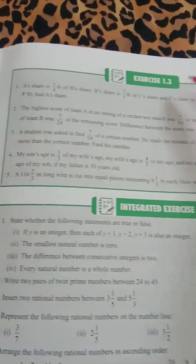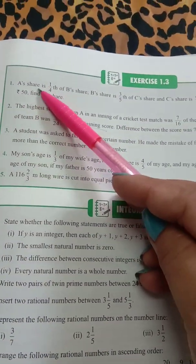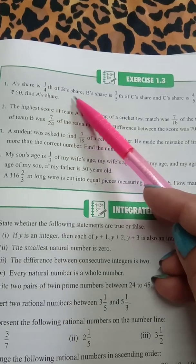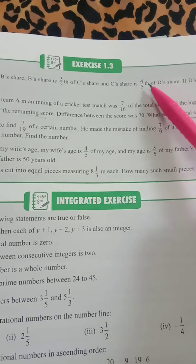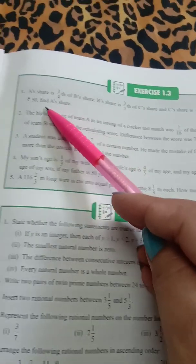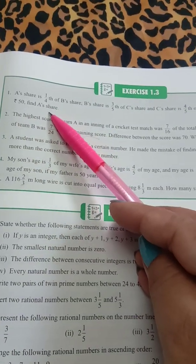Now children, let's start exercise 1.3, question number 1. A's share is 1/4 of B's share, B's share is 3/5 of C's share, and C's share is 4/5 of D's share. If D's share is Rs. 50, find A's share.